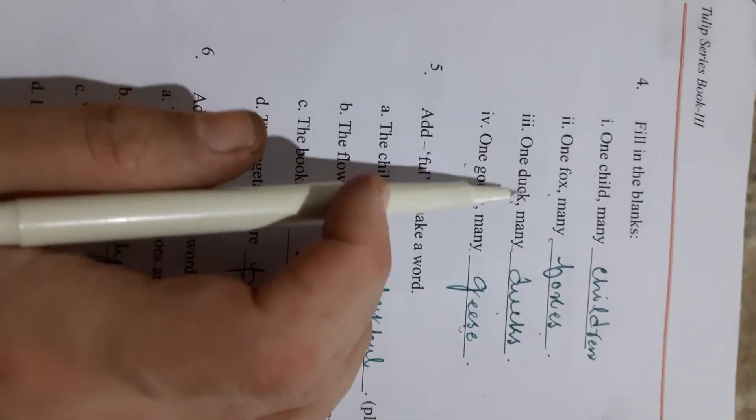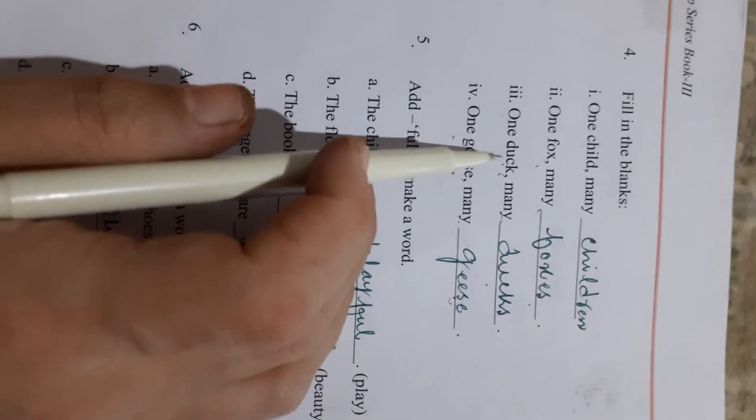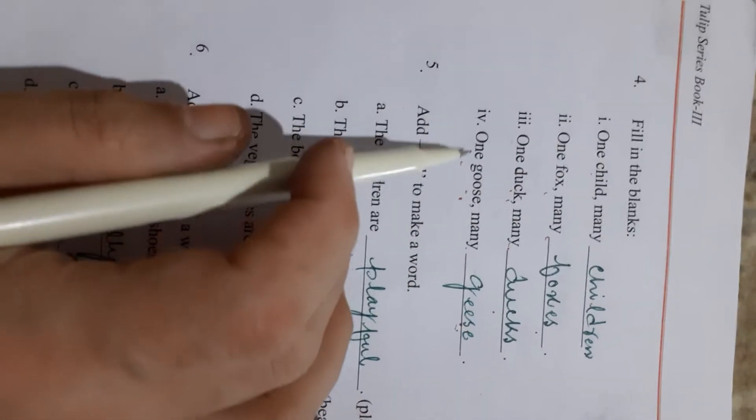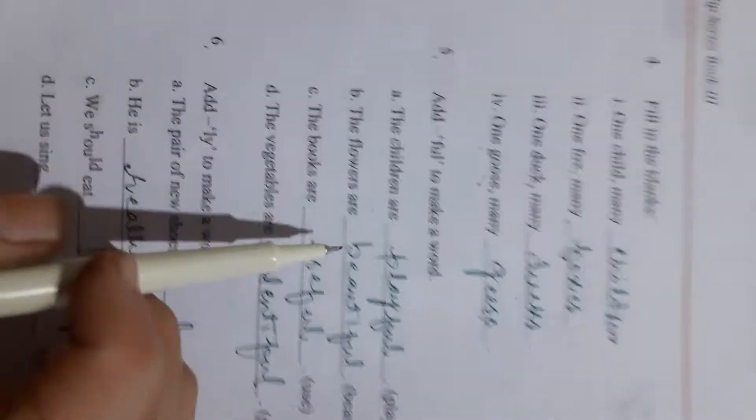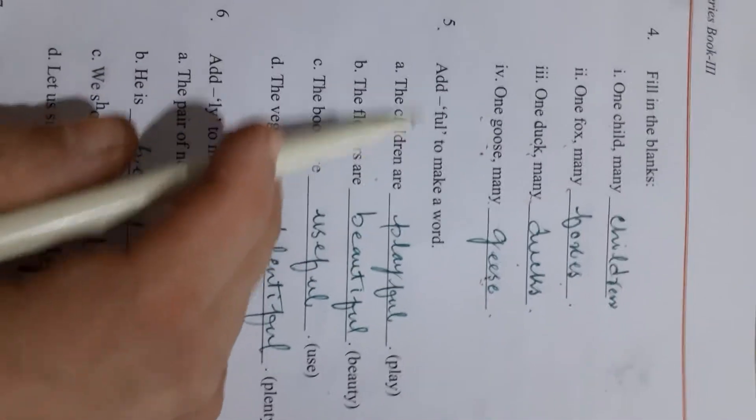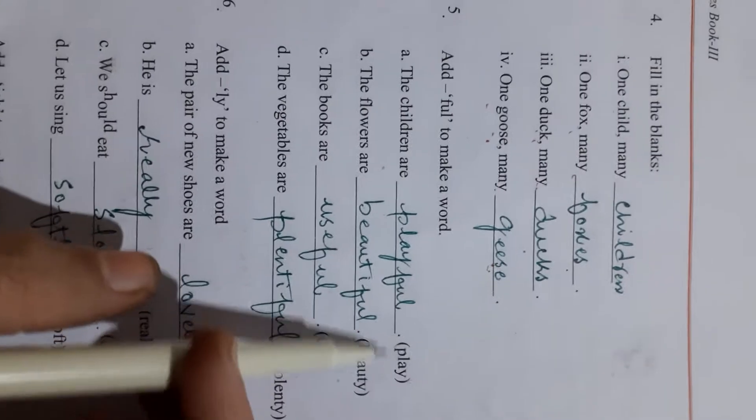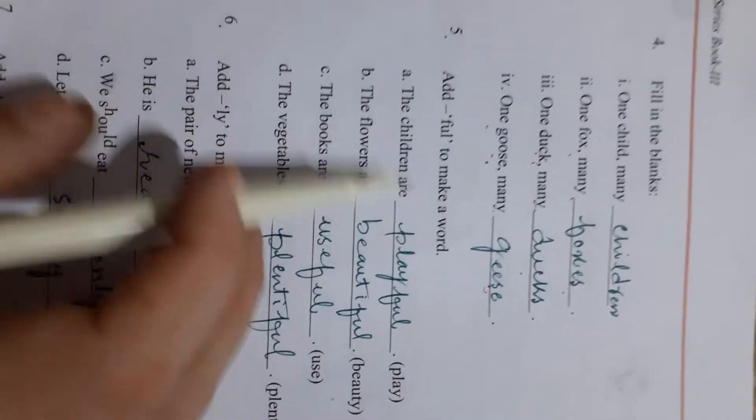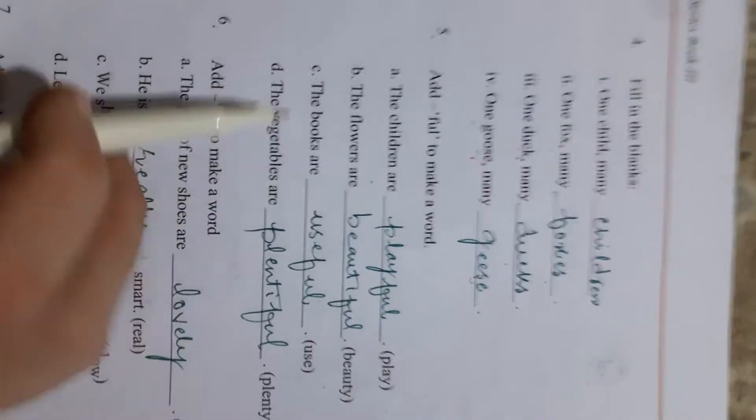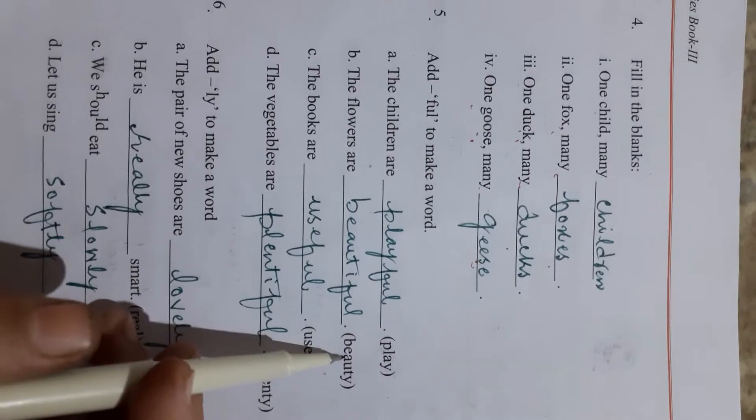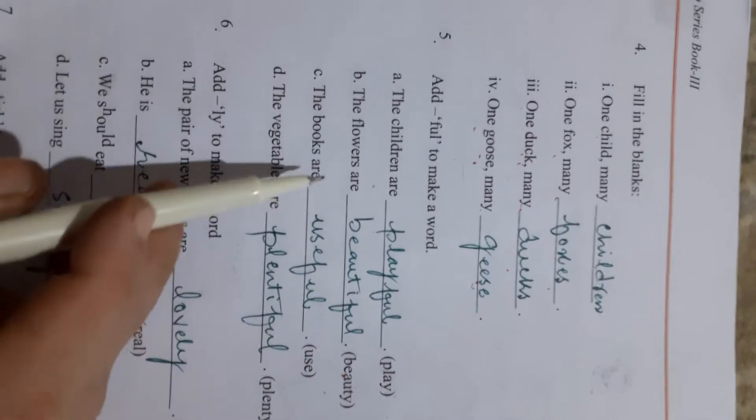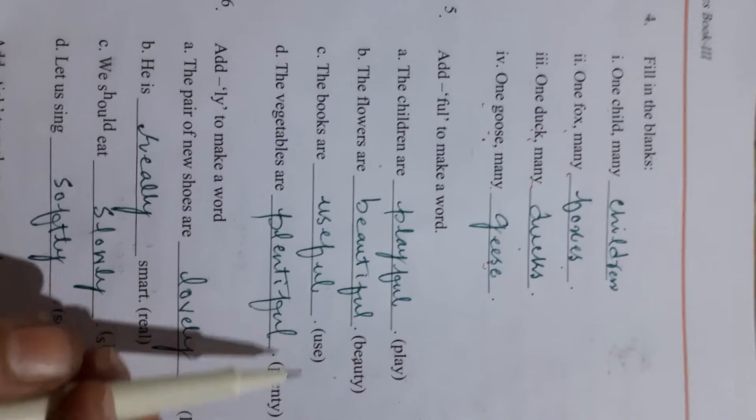Foxes. One duck. Singular means one goose, many geese. Add ful to make a word. The children are playful. The flowers are beautiful. The books are useful.